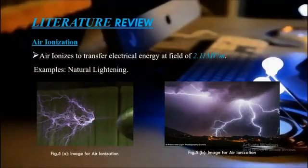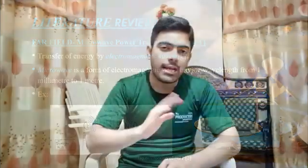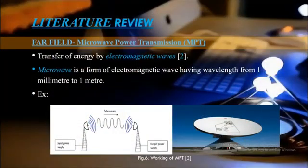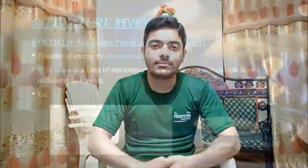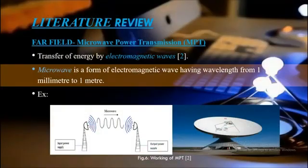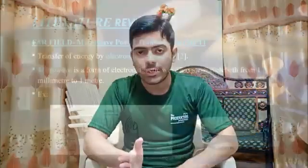Now comes the last type: far-field power transmission — this is the most interesting part of the lecture. The first technique to transfer energy at very far distances is microwave power transmission. This is not the microwave oven — it is the transfer of energy by electromagnetic waves. As shown in the slides, microwaves are a form of electromagnetic waves with wavelengths from 1 millimeter to 1 meter, and this technique requires huge antennas to transfer the energy, as demonstrated in the figure.